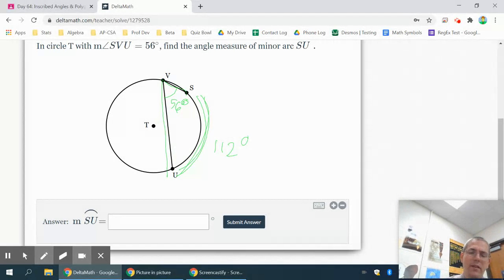So pay attention to what they're giving you, whether they're giving you an angle or an arc. Pay attention to whether it's a central angle or an inscribed angle, and that'll help you out a lot on these. Let's go ahead and try another type.